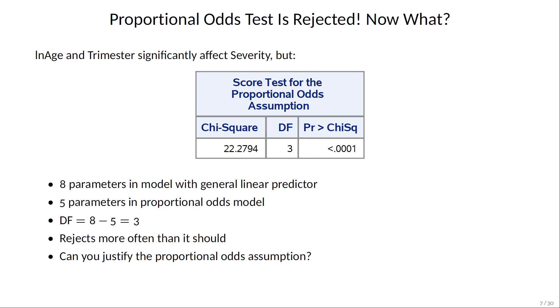This test actually rejects too often. If it does not reject the assumption, then you're fine. If it does reject, then you still may be able to justify using the proportional odds in other ways. I'm going to show you two graphical methods to attempt a justification.